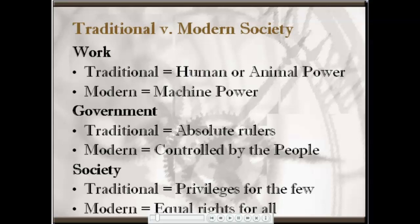Let's start by looking at the concept of work. In traditional society, work would be done using human or animal power. In modern society, machines start to do the work. Regarding government: in traditional society, we tend to see absolute rulers. We've described the Spanish and the Portuguese empires and also looked at the Muslim empires — all of these would have some variation of this absolutist control from a single ruler.